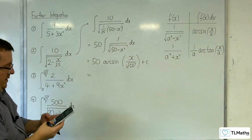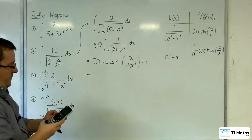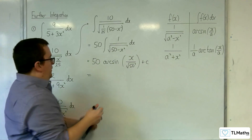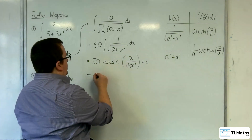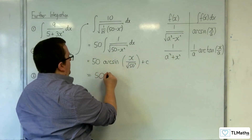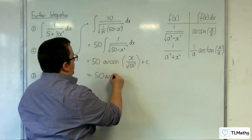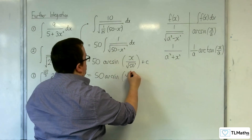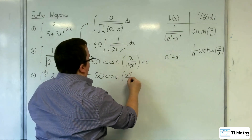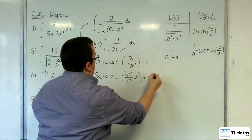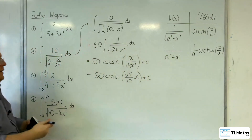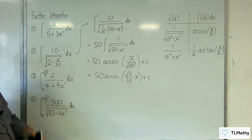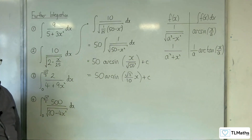And 1 over root 50 is root 2 over 10. So 50 arc sine of root 2 over 10 times x plus your constant c. That's the nicest form we can get our answer into.